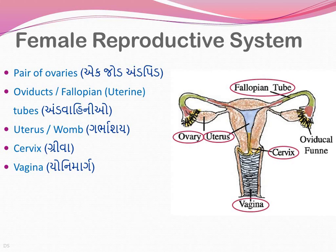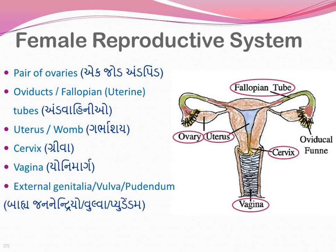There is a diagram of the external genital organs. In case of male, the penis is the external genital structure. Similarly, in the case of female, the vulva or pudendum is the external genital structure. It contains four different organs, which we will learn in the next slide.